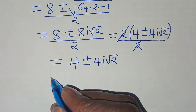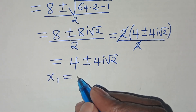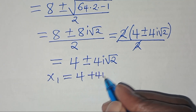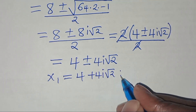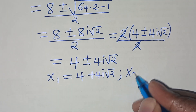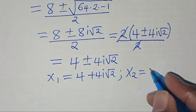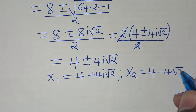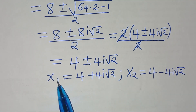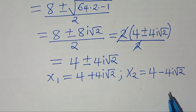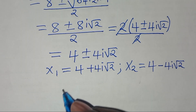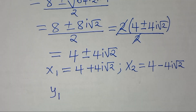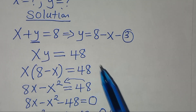Therefore x1 equals 4 plus 4i square root of 2, and x2 equals 4 minus 4i square root of 2. These are the two values of x.